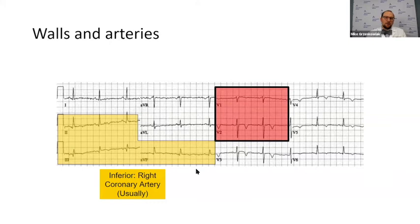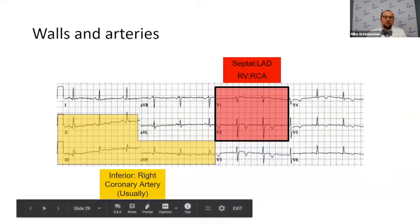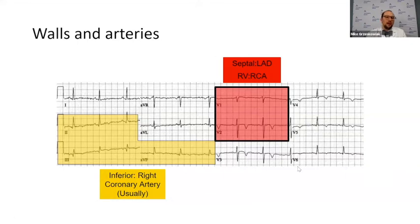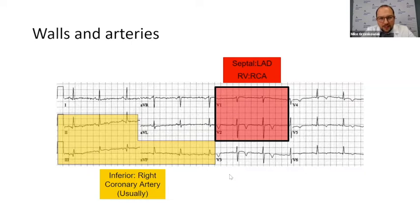The next leads are V1 and V2, known as the septal leads, supplied by the left anterior descending or LAD. But if you have ST elevations isolated in V1 and V2 and not in the other precordial leads — V3, V4, V5, V6 — you should be thinking of RV involvement. The right ventricle could be involved and the RCA may be the culprit. This is important because if the RV is down, your treatment is going to be different, just like in the first case of this lecture.